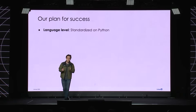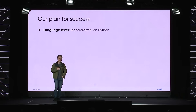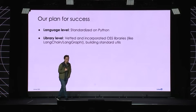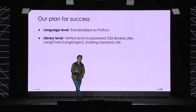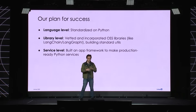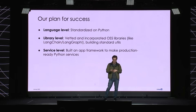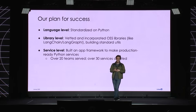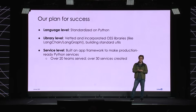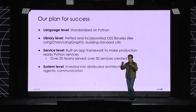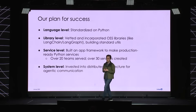First, I'd like to talk about how LinkedIn standardized on using Python. Traditionally we used Java to build all of our apps, but with Gen AI we decided to take the bold move to build everything in Python. At the library level, I'll talk about how we vetted and incorporated open source libraries — like LangChain and LangGraph — and built standard utilities on top. We built an app framework used by over 20 teams, with over 30 services created to support Gen AI product experiences on LinkedIn. Finally, we invested in new distributed architecture to specifically support agentic modes of communication.